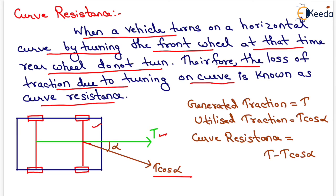So, the loss of traction due to turning on curve is known as curve resistance which will be equal to T minus T cos alpha. This is known as curve resistance.